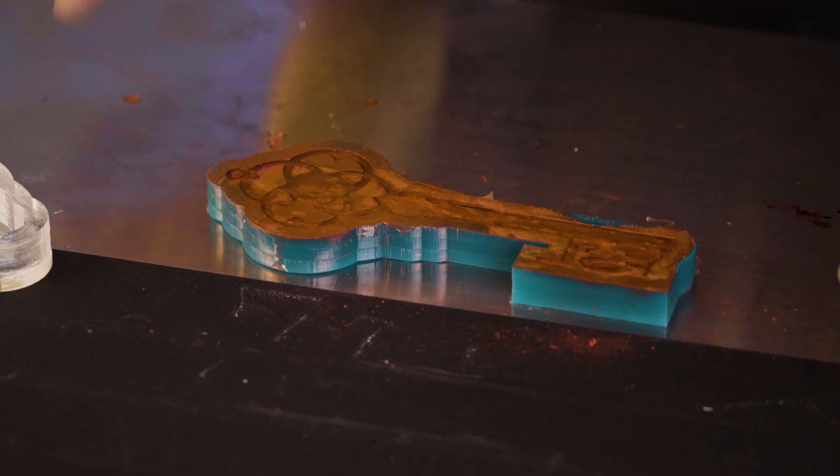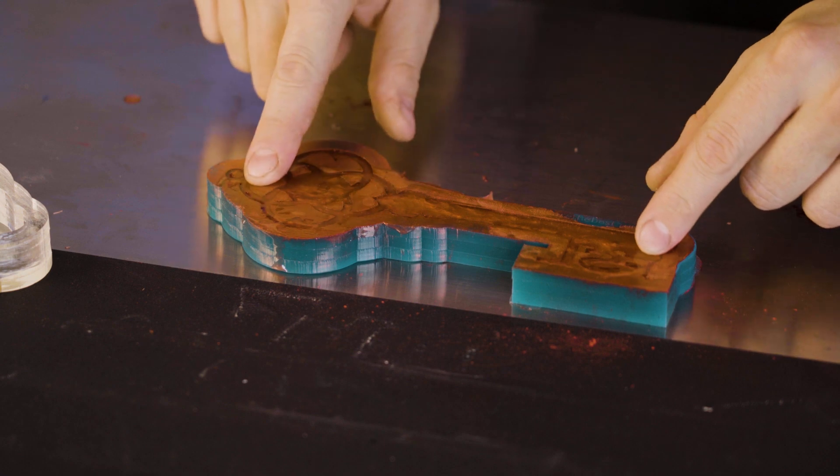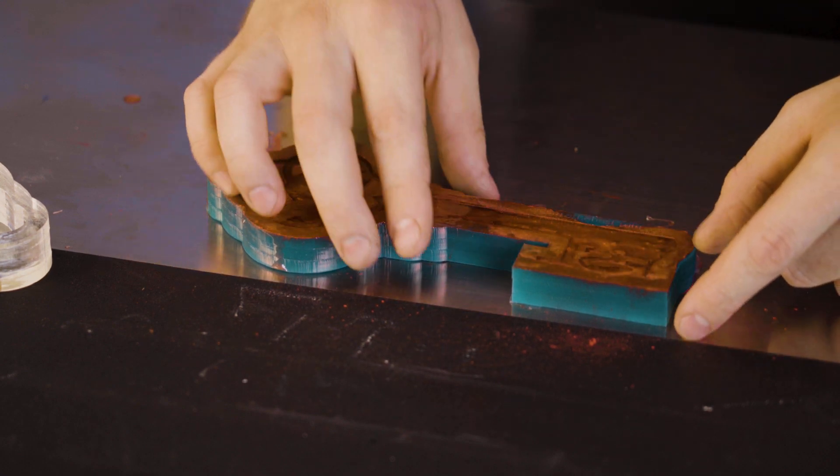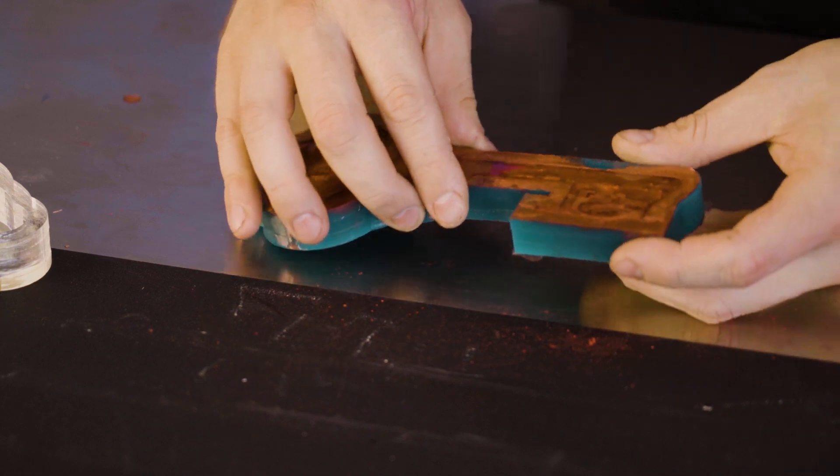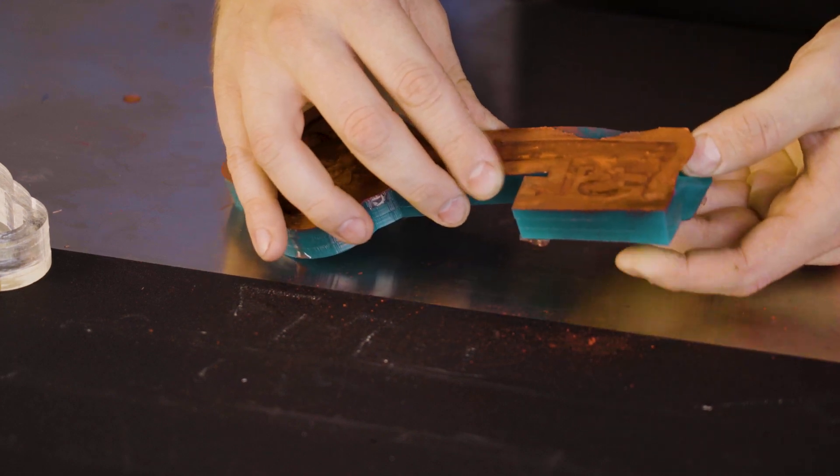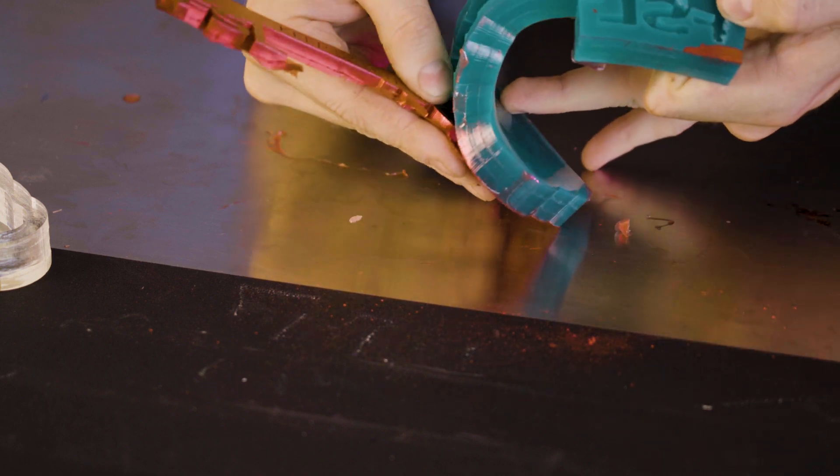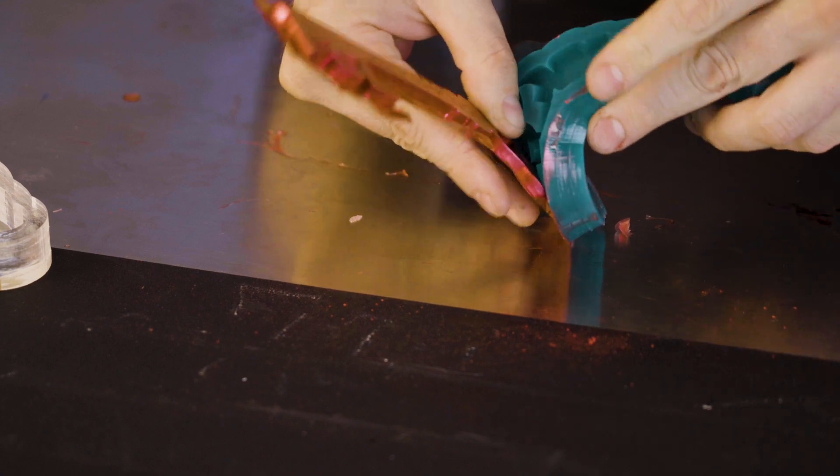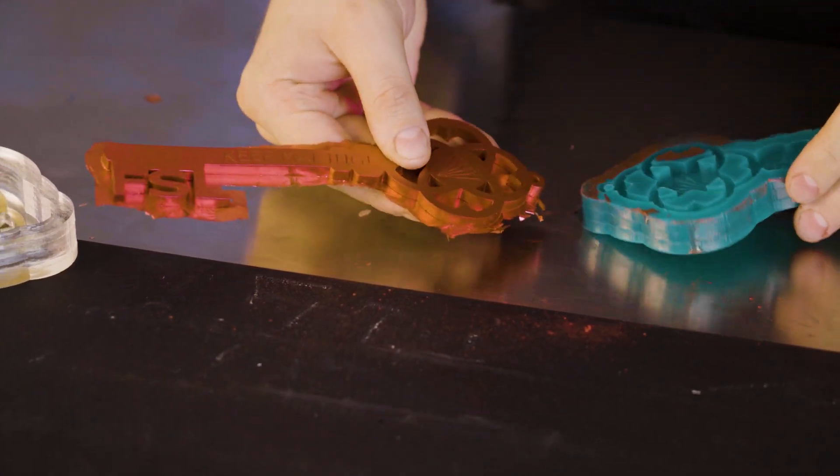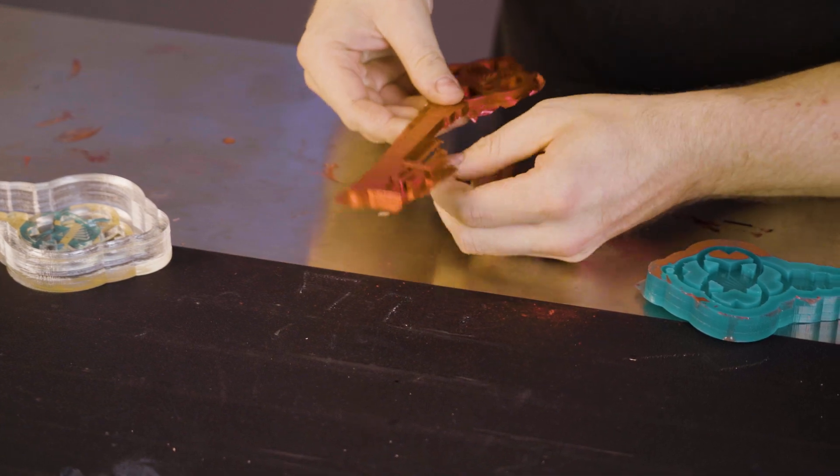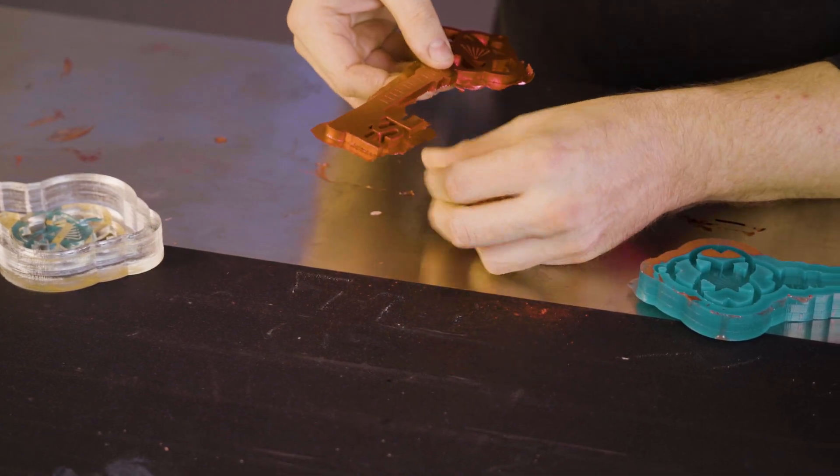Alrighty it's been a handful of minutes. This is semi-rigid urethane so it takes a little longer to fully cure but we can pull it out of our mold and then set it to finalize. Just simply peel it out.